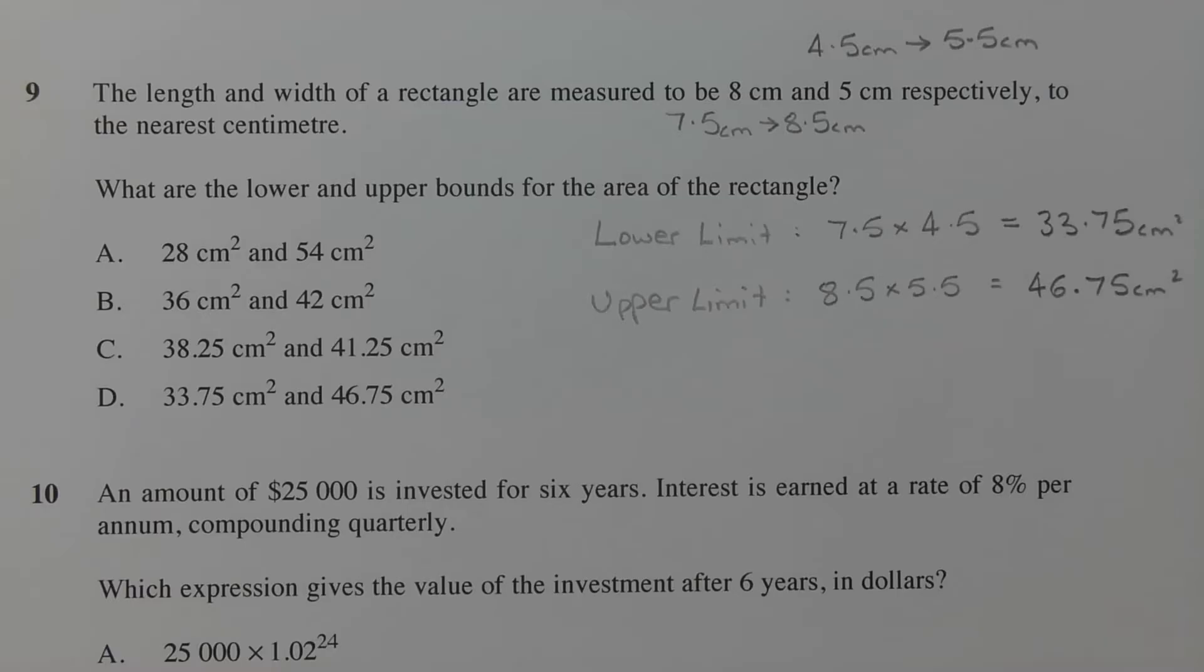To get the lower limit or the lower bound for the area of the rectangle, we take the lower limit for the length and multiply it by the lower limit for the width to give us the lower bound for the area of the rectangle. So 7.5 times 4.5 gives us 33.75 cm².